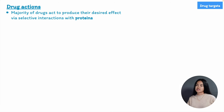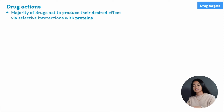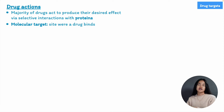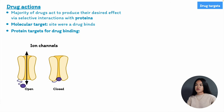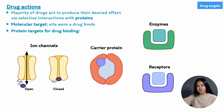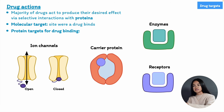The majority of drugs produce their effects via selective interactions with proteins — they will bind to a protein and alter the function of that protein. We refer to the site where a drug binds to exert its action as a molecular target. We can divide these protein targets for drug action into four main groups: ion channels, carrier proteins, enzymes, and receptors. Each of these targets plays an important role in cellular function and can be targeted by drugs to achieve therapeutic effects. Drugs can enhance the activity of a protein, inhibit it, or modify its normal function.